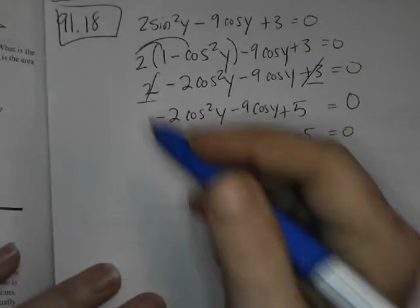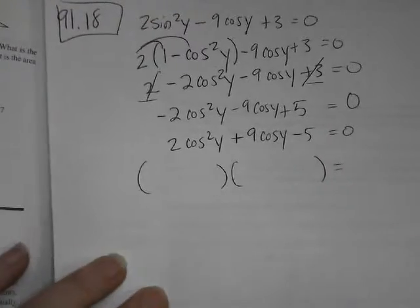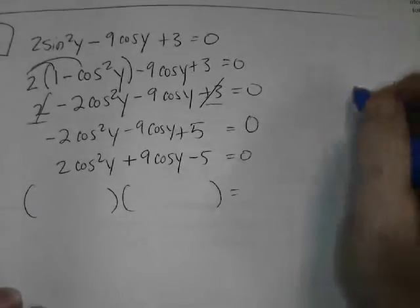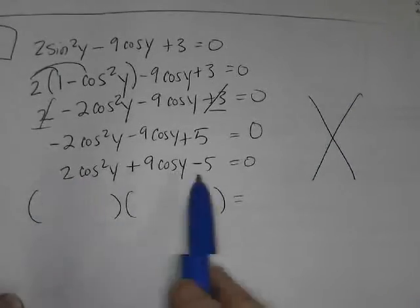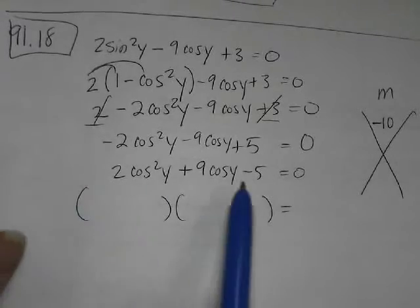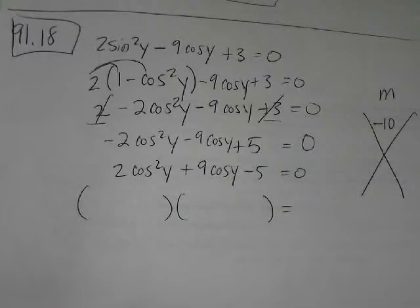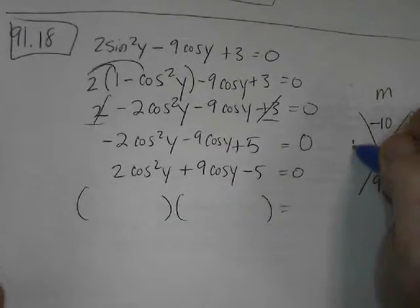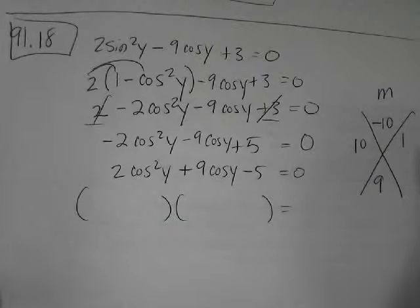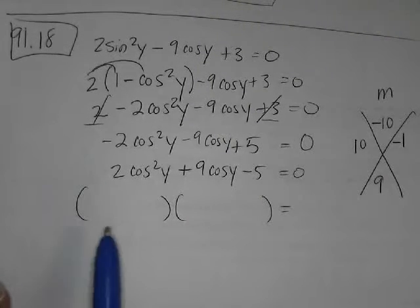Now I'm going to do a diamond problem. I hope I don't have to bust out the quadratic formula or something. So I'm trying to find something that multiplies to make negative 10. I took the 2 and the negative 5, and that's what it has to multiply to, and then positive 9. I'm thinking 10 times 1, 10 times negative 1, right?